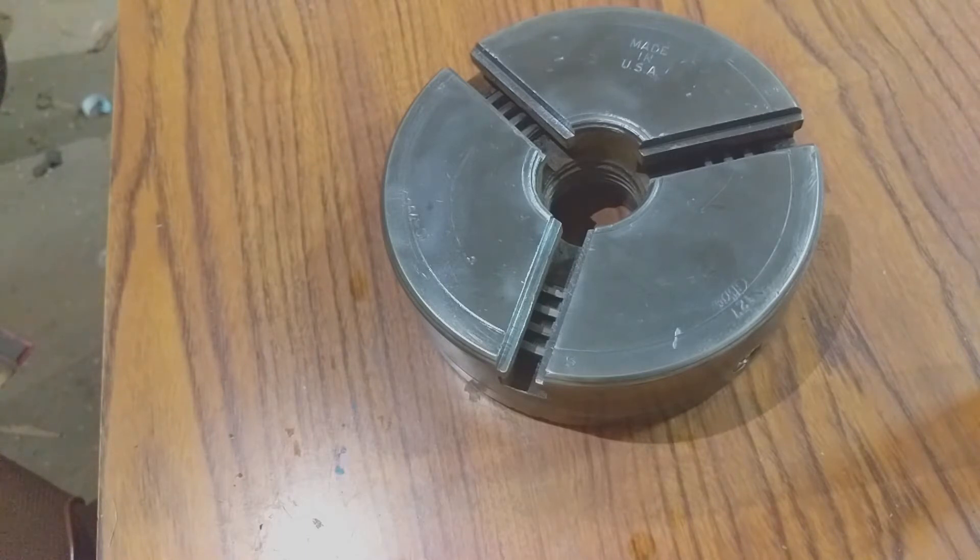Each one of the pieces, each one of those slots has a number beside it, and the corresponding jaw has to be put in that number first. You turn the scroll, which is—you can see those little lines inside of there. On the back side of the crown gear is what is called a scroll.